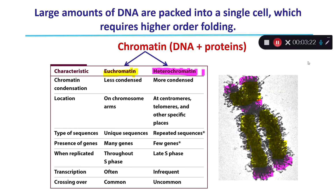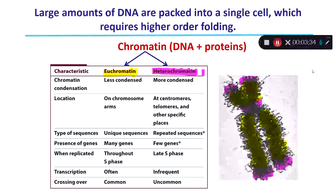This is not possible for eukaryotes, which have multiple linear chromosomes that have to be packaged within a nucleus. For eukaryotes, DNA has to be associated with proteins in order to condense it down small enough to what we call a chromosome.